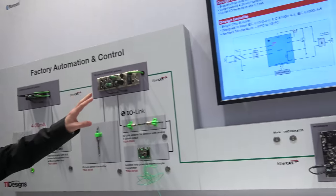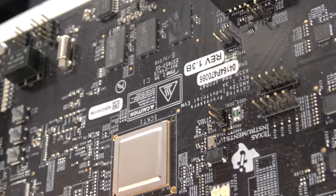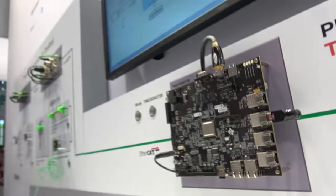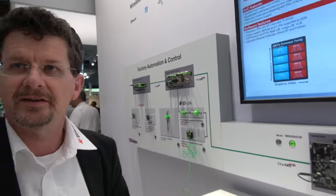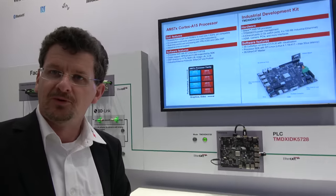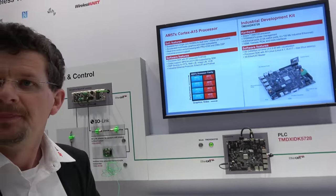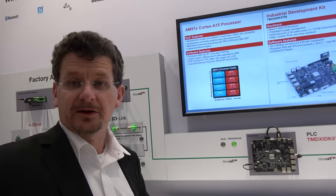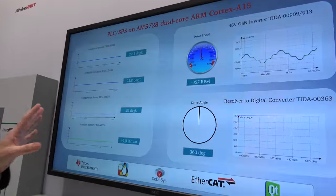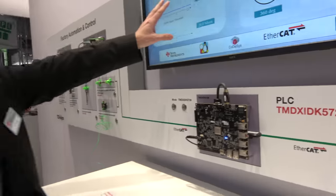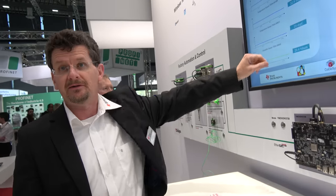This is the PLC that's collecting the data through the EtherCAT interface. It's running CODESYS PLC software. The chip is the AM5728 — it's the dual Cortex-A15 microprocessor running at up to 1.5 GHz, so very high performance. It runs Linux, and you can implement a complete PLC on top of that. It directly drives the HDMI monitor and the graphics, collecting the data and showing them in a graphical representation.